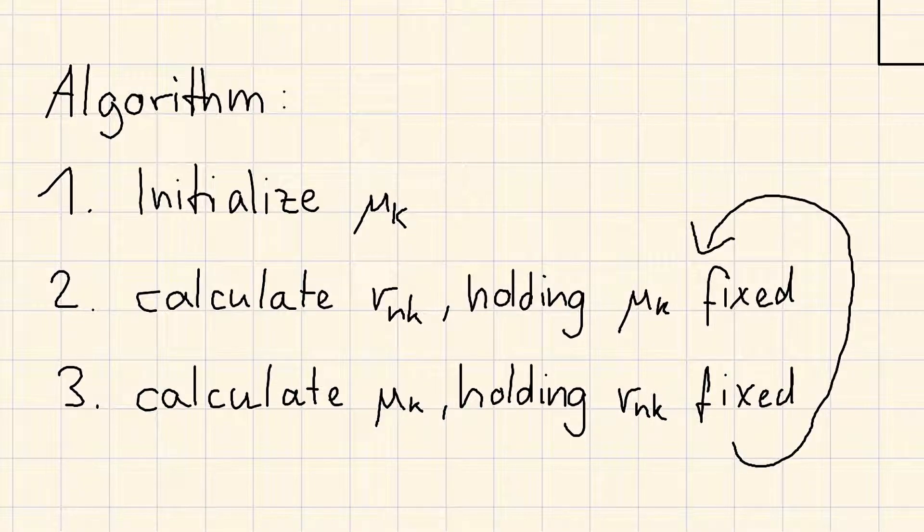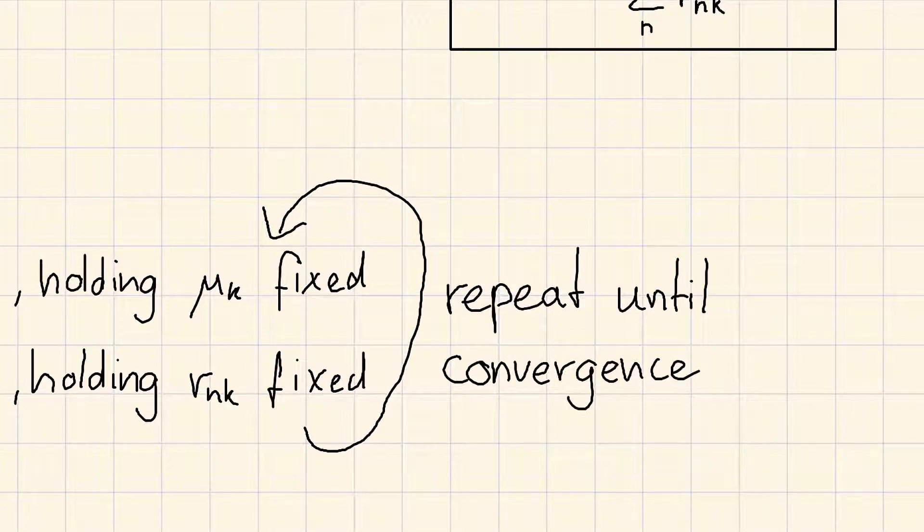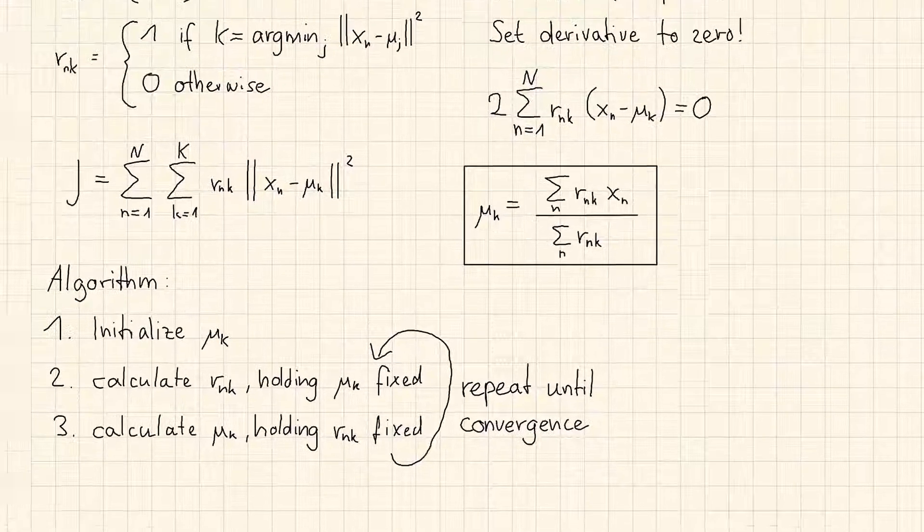We then repeat this procedure until convergence. This is the whole theory of k-means.